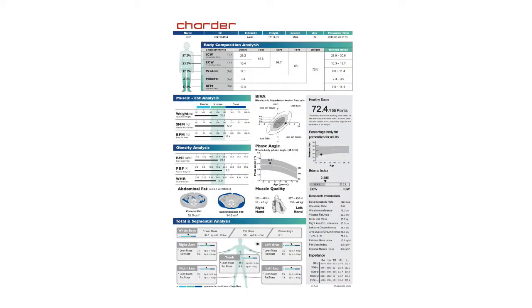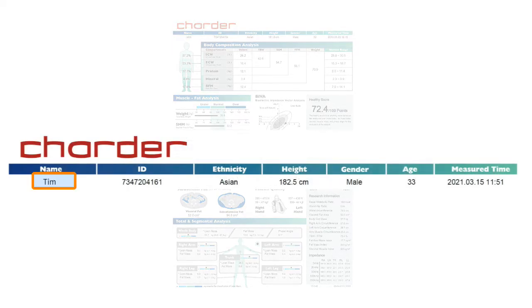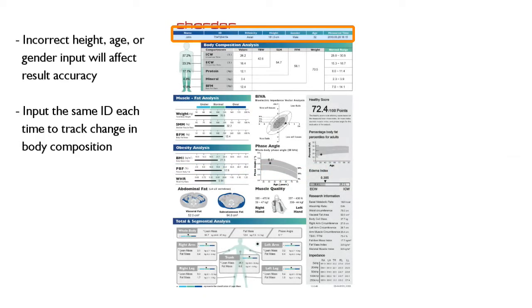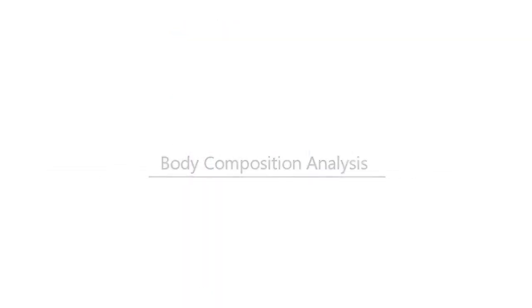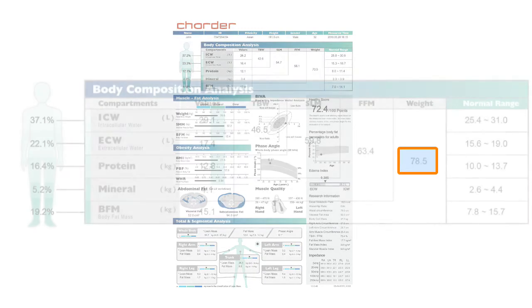Today, we'll be walking you through the Charter Body Composition Medical Results Sheet. At the top of the results sheet, you'll see your name, ID, height, gender, and more. It's important to make sure that user data is input correctly and that you don't have the wrong person's result sheet in your hands. At the right of this section, you'll see your total body weight.